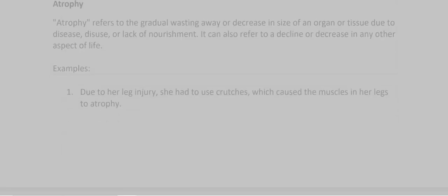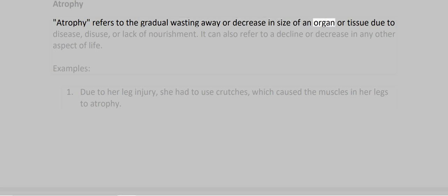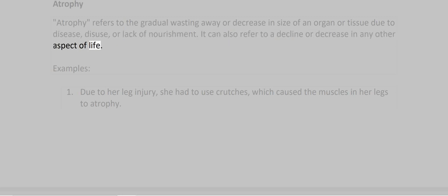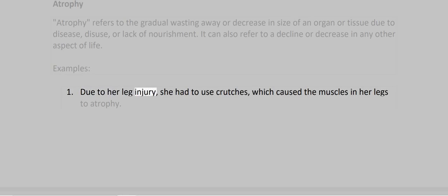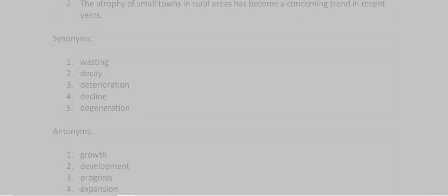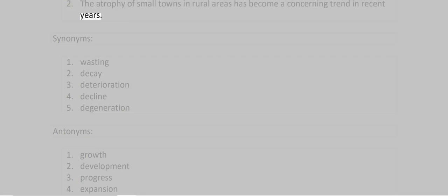Atrophy. Atrophy refers to the gradual wasting away or decrease in size of an organ or tissue due to disease, disuse, or lack of nourishment. It can also refer to a decline or decrease in any other aspect of life. Examples: 1. Due to her leg injury, she had to use crutches, which caused the muscles in her legs to atrophy. 2. The atrophy of small towns in rural areas has become a concerning trend in recent years.